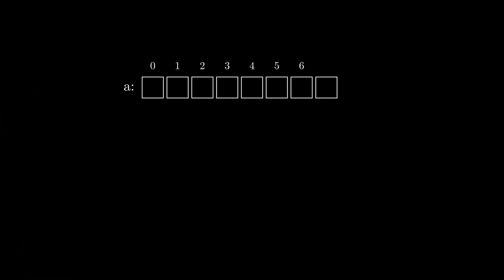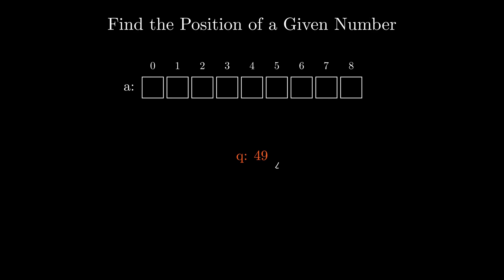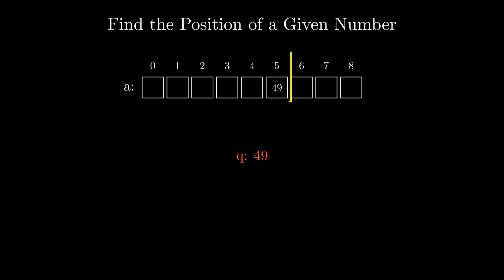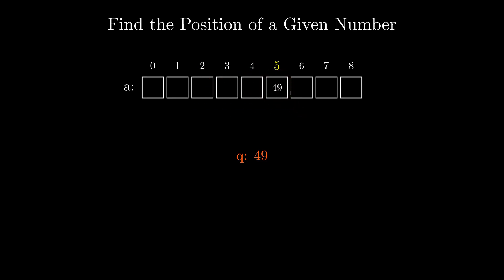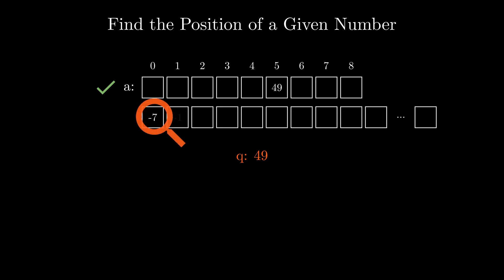Imagine you have a large list of numbers stored in increasing order. Now you get another query number and you should tell the position of that number in the list as fast as possible. One might go over the list element by element and return the index as soon as the query number is found, but even if that approach would work fine for small collections, it would be really slow for large lists of numbers.